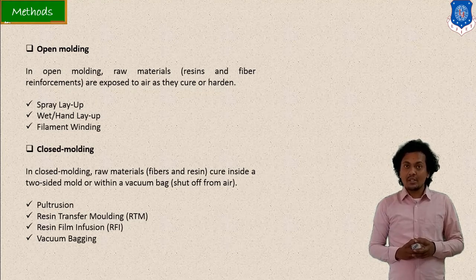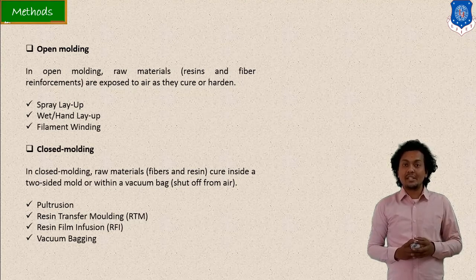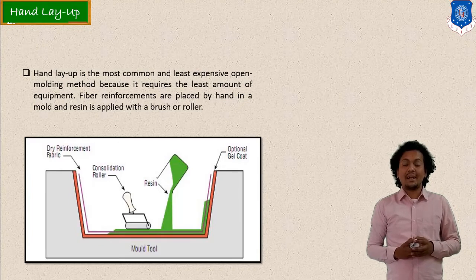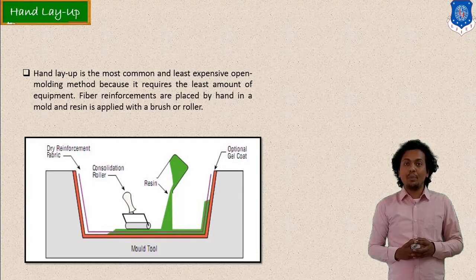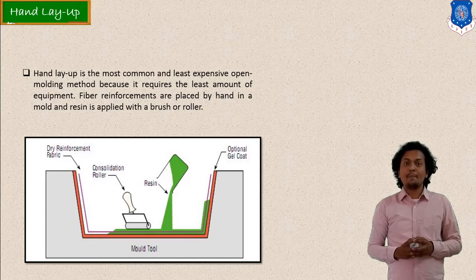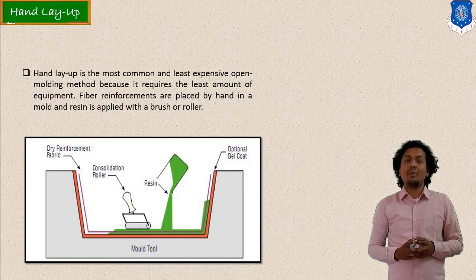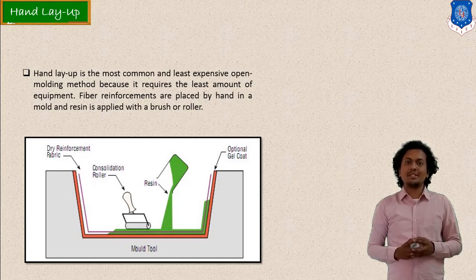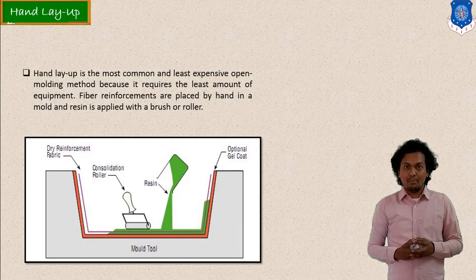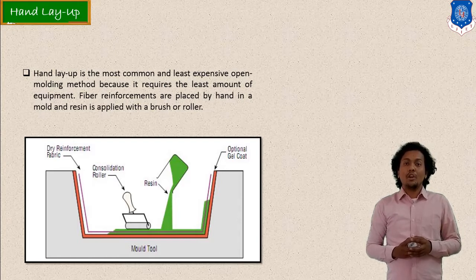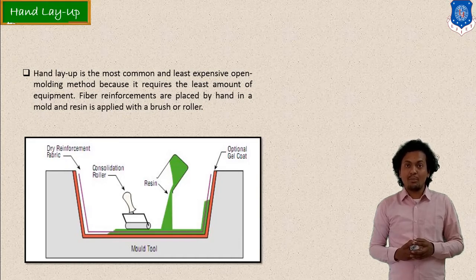Let us start our discussion on various processes under these categories. The first process is the hand layup process, which is a category of open molding. As per the name, this process can be done in open molding with manual effort — with the help of your hand, you can make your composite material.